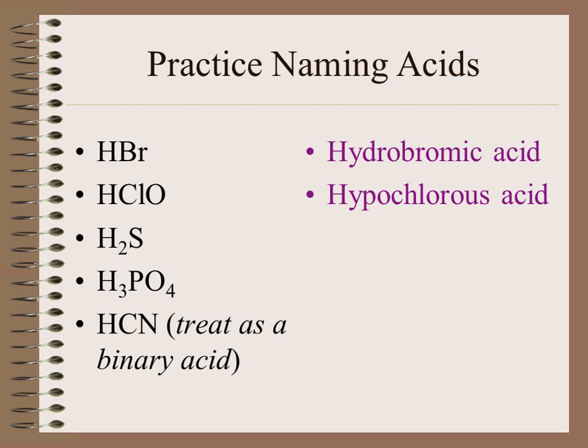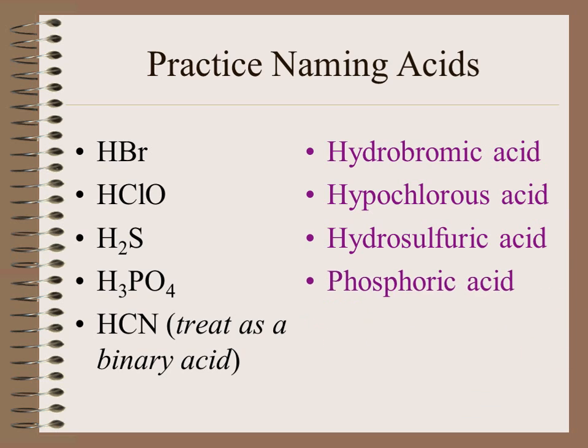H₂S is a binary acid, so it will start with hydro, and this one will be named hydrosulfuric acid. H₃PO₄ is another ternary acid, based on the phosphate ion, and so this would be called phosphoric acid.